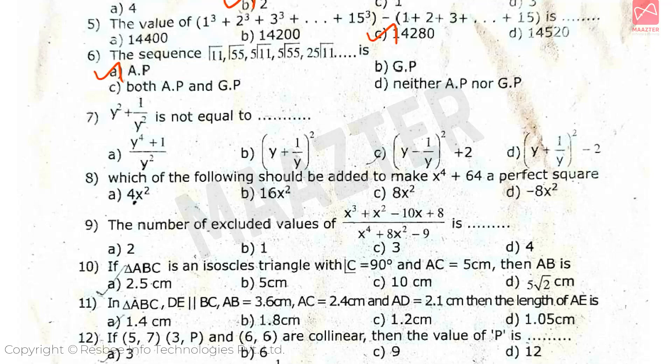Next, y² + 1/y² is not equal to, answer is Option B. Next, which of the following should be added to make x⁴ + 64 a perfect square, answer is Option B.